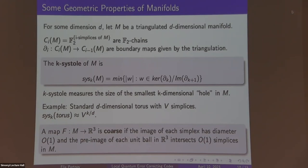A non-standard geometric feature relevant to us: a map f from M to R3 is called coarse if the image of each simplex has diameter O(1) and the pre-image of each unit ball in R3 intersects O(1) simplices in M. This roughly means we can collapse M to three-dimensional space without changing the geometry too much — no large pre-images and no stretched simplices. For example, there is no coarse map from a very large four-dimensional ball to R3, because any collapse of a large four-dimensional ball to R3 will have some pre-image of size like V-to-the-three-fourths.